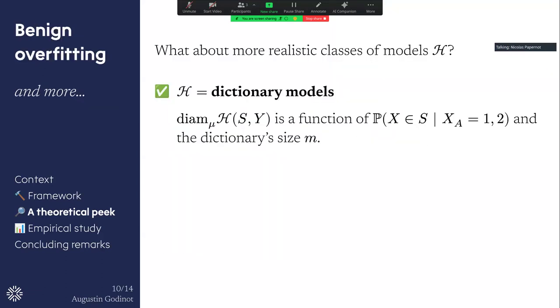So of course, this is a very unrealistic type of hypothesis class. So we try to look at different, at other type of hypothesis class. So dictionary models. So you remember the training data and then you try to have an educated guess after. Here we show that the guarantees that we have on the audits are dependent, still on these proportions, but also on the dictionary size. So on some kind of notion of the capacity of the hypothesis class.